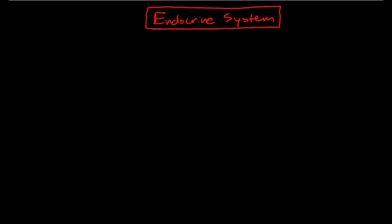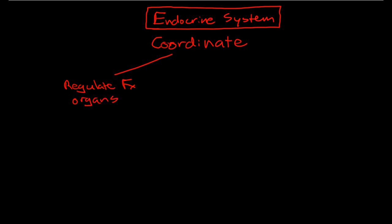Welcome to this video on the endocrine system. This video will provide a basic overview of the endocrine system and a discussion of the hypothalamic pituitary axis that controls a large part of it. The basic responsibility of the endocrine system is to coordinate all of the cells in our body so they are all working together, and it does this in two ways: it regulates the function of body organs on a day-to-day basis, and it regulates adaptation to change.